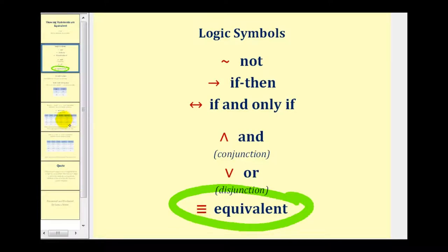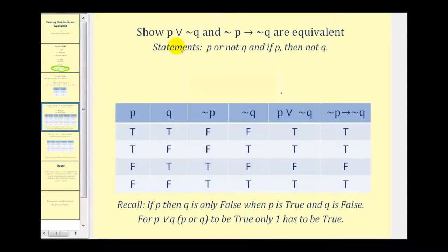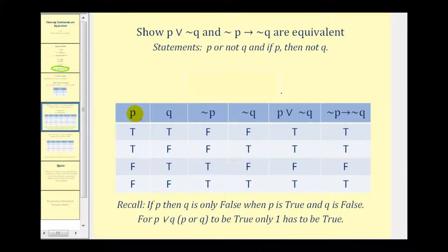Let's take a look at our first example. We want to show that p∨¬q and if ¬p then ¬q are equivalent. To set this up, the first columns will be p, q, ¬p, and ¬q. Notice that where p is true, ¬p is false, and where p is false, ¬p is true — and the same thing for q and ¬q.